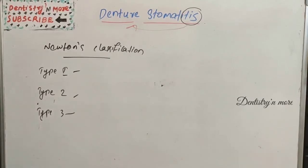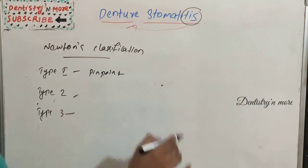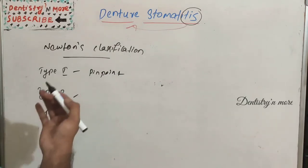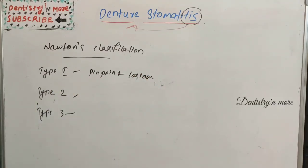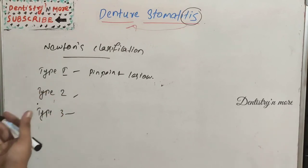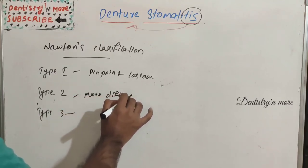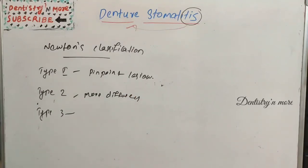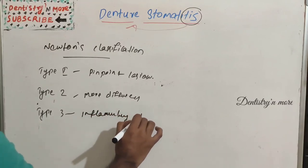There is a classification for denture stomatitis called Newton's classification, with three progressive stages. Type 1 involves numerous pinpoint changes. Type 2 is a more diffused simple lesion involving part or all of the maxilla — the denture-covering area. Type 3 is inflammatory papillary hyperplasia, most commonly on the central part of the hard palate and alveolar ridge.